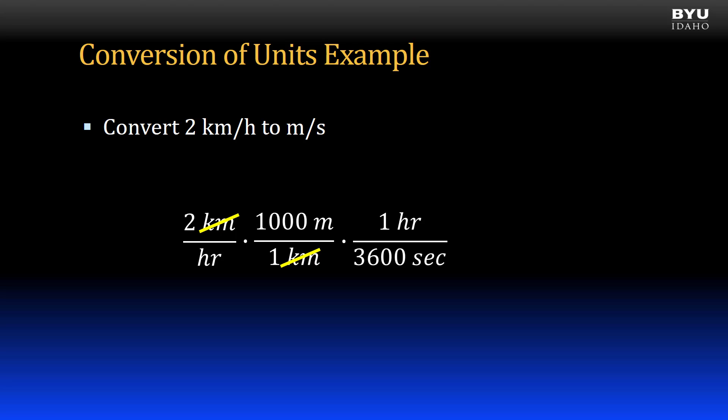Putting in our conversion term, 1 hour over 3,600 seconds, allows us to cancel the numerator, hours, from the conversion term, and the denominator, also hours, from the initial term.